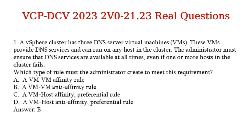Question 1. A vSphere cluster has three DNS server virtual machines (VMs). These VMs provide DNS services and can run on any host in the cluster. The administrator must ensure that DNS services are available at all times, even if one or more hosts in the cluster fails. Which type of rule must the administrator create to meet this requirement?